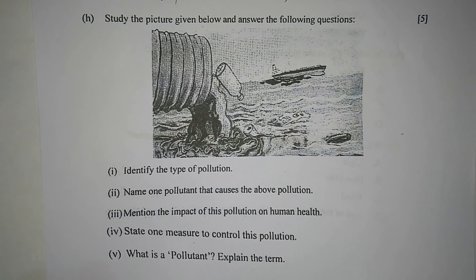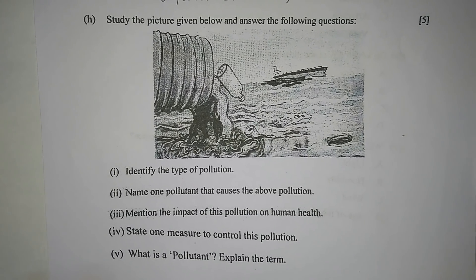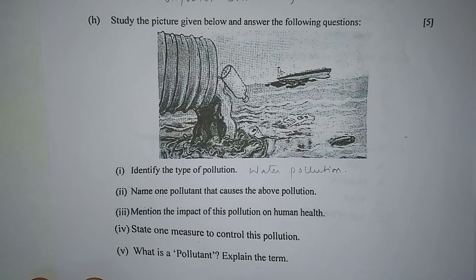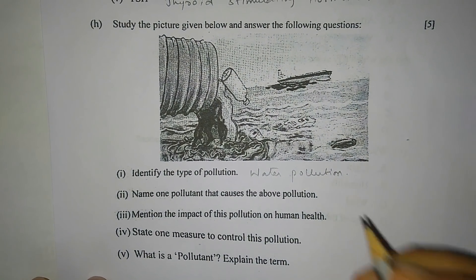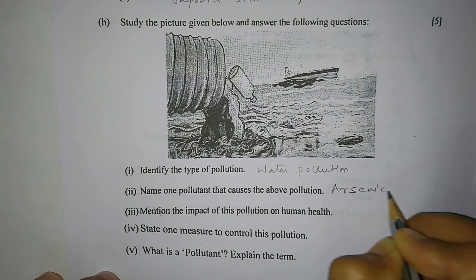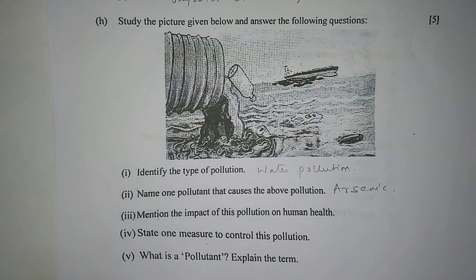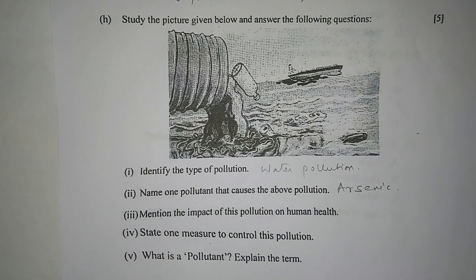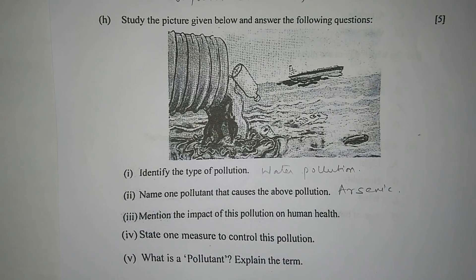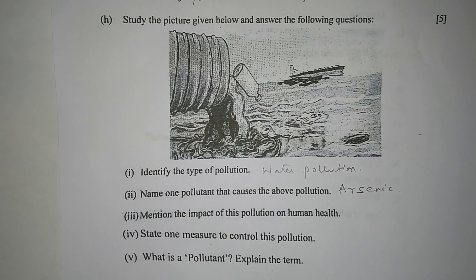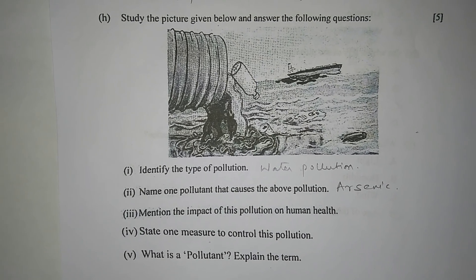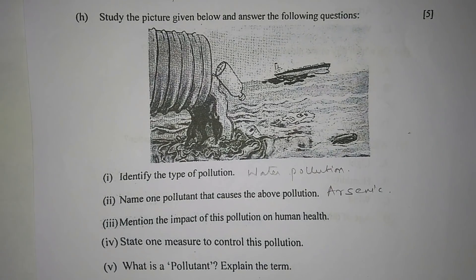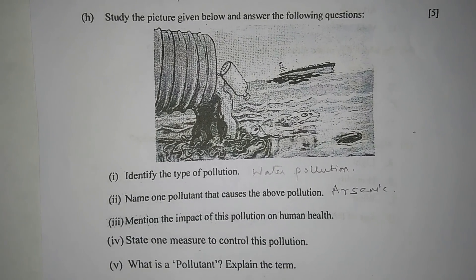Question 1h: Study the picture given below and answer the following questions. Number 1 — identify the type of pollution: water pollution. Number 2 — name one pollutant: arsenic. Number 3 — mention the impact on human health: it causes numerous skin diseases. Number 4 — one measure to control this pollution: sewage water treatment plant. Number 5 — what is a pollutant? A pollutant is a substance introduced into the environment that has undesired effects.